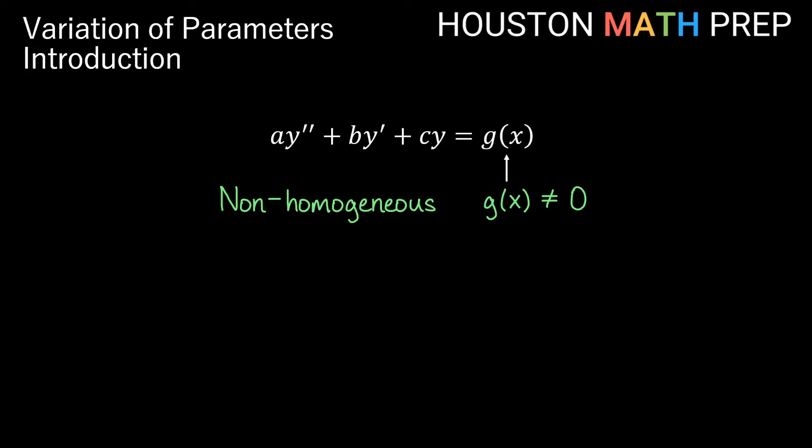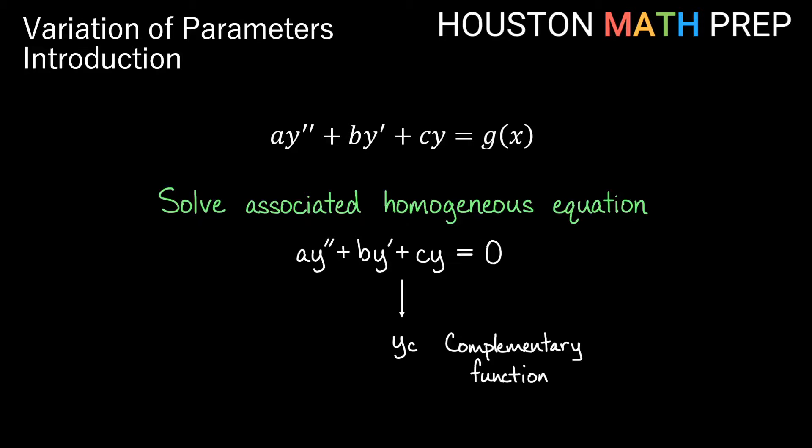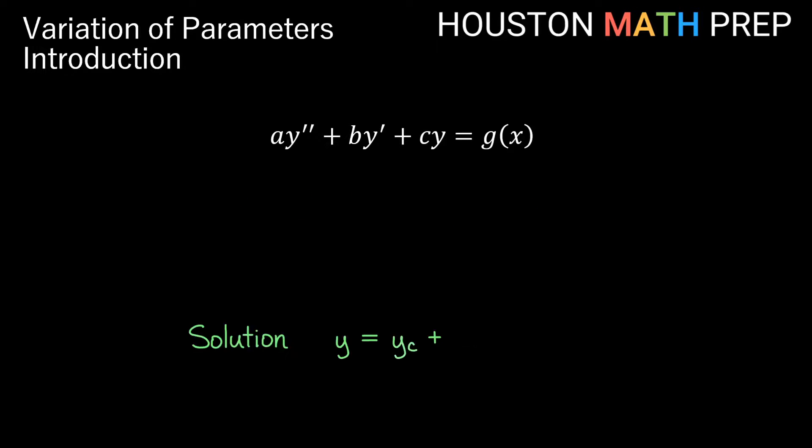As with the method of undetermined coefficients, when solving a non-homogeneous equation using variation of parameters, we will first solve the associated homogeneous equation — the same left side but equal to zero — and that gives us the complementary function, which will be part of our general solution. Our general solution will be y equals the complementary function y sub c plus a particular function.